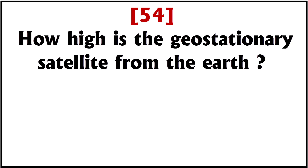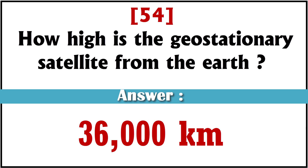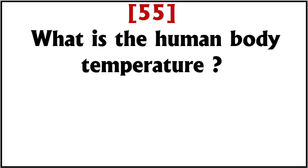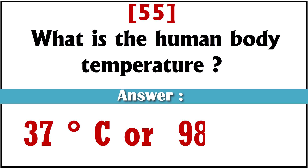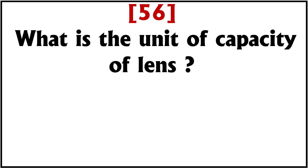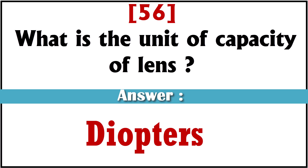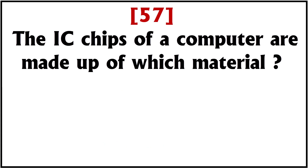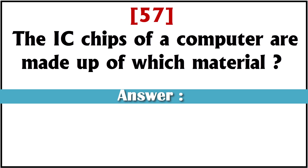How high is the geostationary satellite from the earth? 36,000 kilometers. What is the human body temperature? 37 degrees Celsius or 98.6 degrees Fahrenheit. What is the unit of capacity of a lens? Diopters. The IC chips of a computer are made up of which material? Silicon.